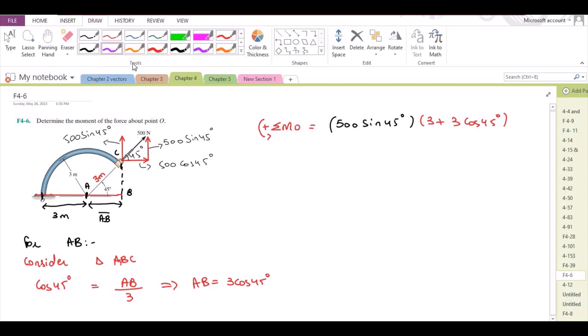The horizontal force component is trying to rotate the assembly in clockwise direction above point O, so it would be taken as negative. Now for the moment arm.